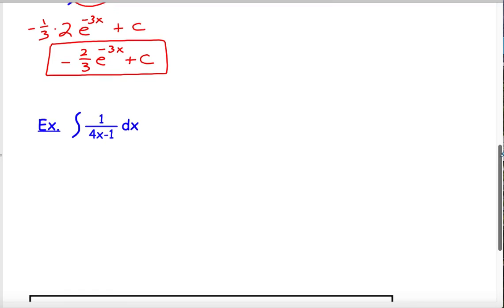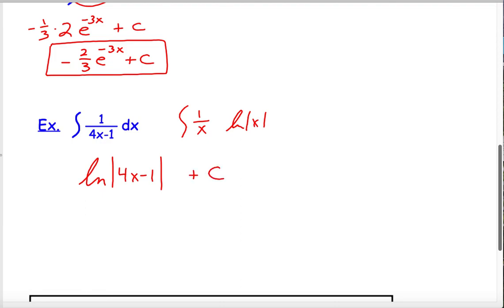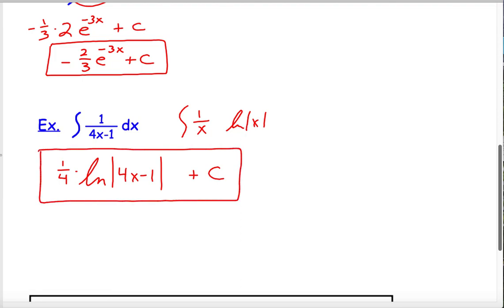Let's try one last one: the integral of 1 over (4x minus 1). This takes the general form of the integral of 1 over x, which is the natural log of the absolute value of x. So we start with natural log of the absolute value of (4x minus 1) plus a constant. Differentiating gives 1 over (4x minus 1) times the chain rule factor of 4, so I offset with 1/4. The final answer is 1/4 natural log of the absolute value of (4x minus 1).